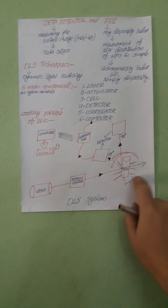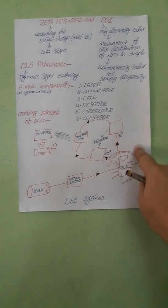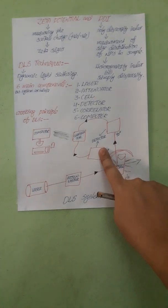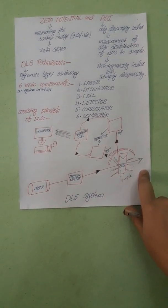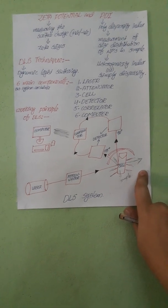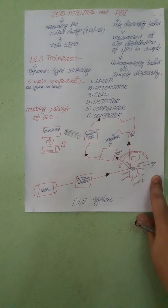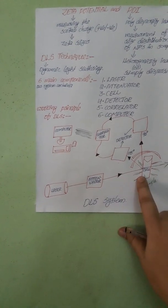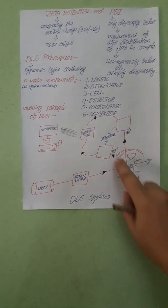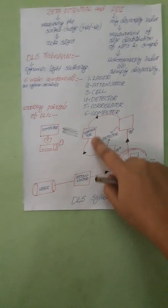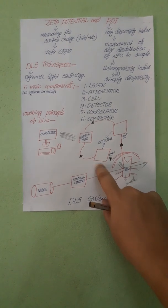The particle scatters the focused light in all directions, which is why we can keep the detector in any position to detect the light. However, if too much light is detected, this detector will be overloaded.